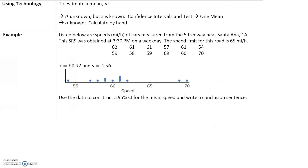To estimate the population, we've been using technology — confidence intervals and tests — but for now we're going to do this by hand. Listed below are speeds of cars measured on the Fife Freeway near San Anam. A simple random sample was obtained at 3:30 p.m. on a weekday, and the speed limit is 65 miles per hour. We randomly selected 12 cars and found their speed. The sample mean is 60.92 and the sample standard deviation is 4.56.